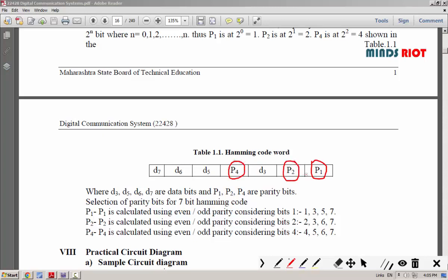This we can find out with 2 raise to 0 equals 1, that is first position parity bit. 2 raise to 1 equals 2, that is second position, and 2 raise to 2 equals 4, that is fourth position.